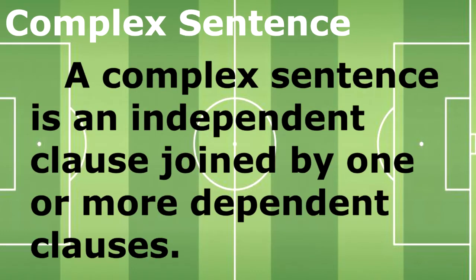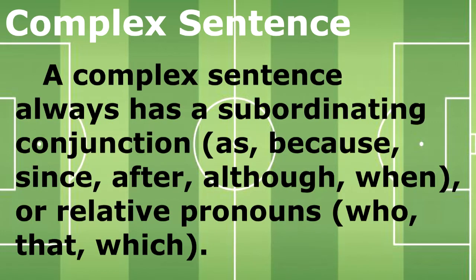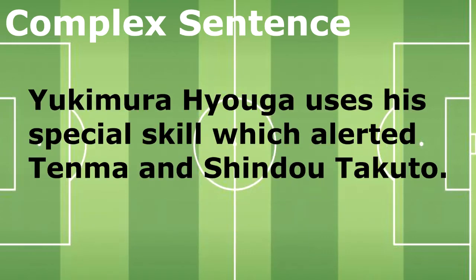On the other hand, a complex sentence is an independent clause joined by one or more dependent clauses. A dependent clause either lacks a subject or a verb, or has both a subject and a verb that does not express a complete thought. A complex sentence always has a subordinating conjunction like as, because, since, after, although, and when, or relative pronouns like who, that, and which. We'll discuss deeper about subordinating conjunctions and relative pronouns in our succeeding videos.